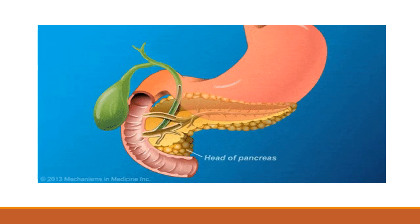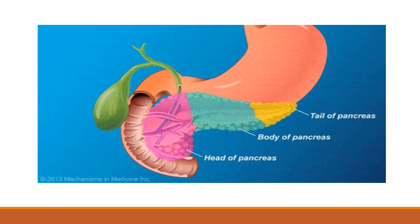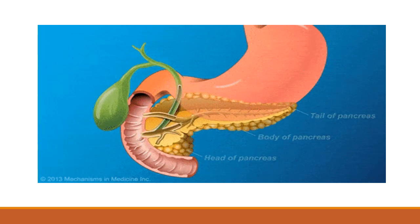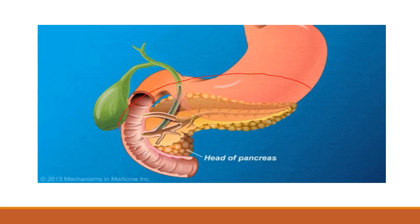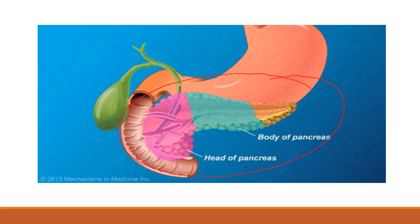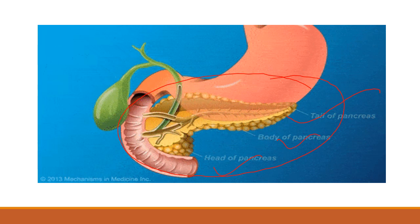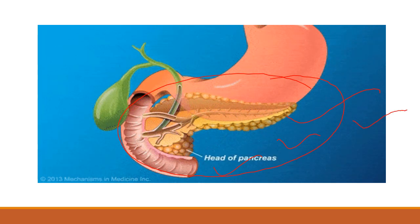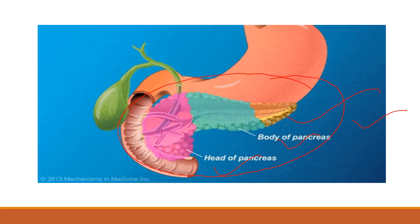The pancreas is an organ that is located in the abdomen and it is present behind the stomach. As you can see, this is the pancreas and it is divided into three parts: head, body, and tail, and they play a very important role.